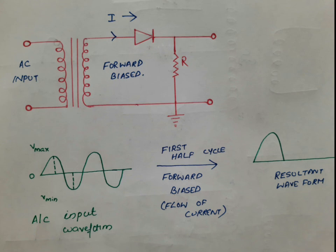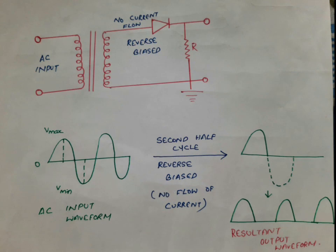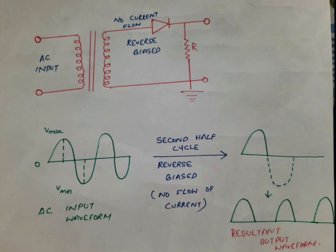In the picture you can see the diode is forward biased — forward biased means the anode is positive with respect to the cathode — and this causes the flow of electric current, giving us the resultant output waveform. During the negative half cycle the diode is reverse biased, meaning the anode is negative with respect to the cathode. Therefore there is no flow of current through the diode, and so the negative half cycle of the alternating current cannot be converted into direct current.